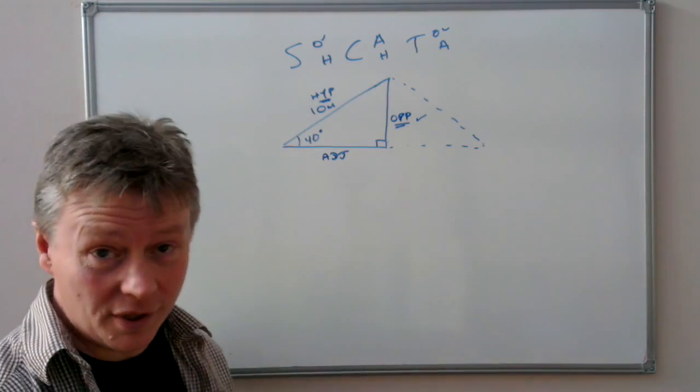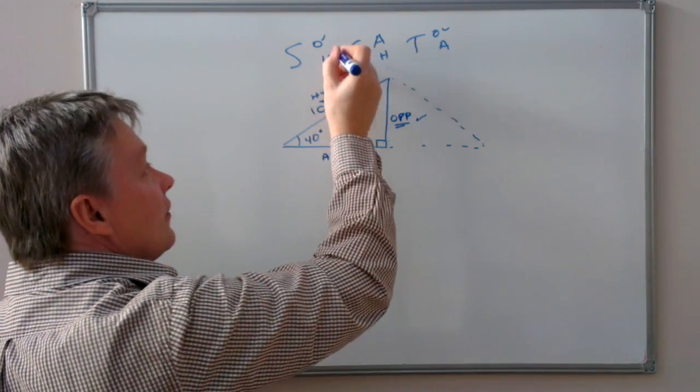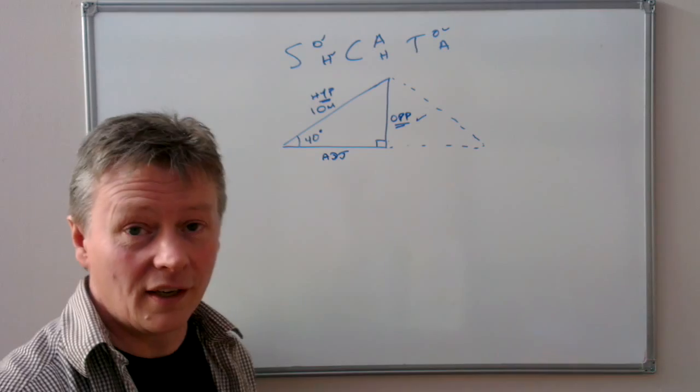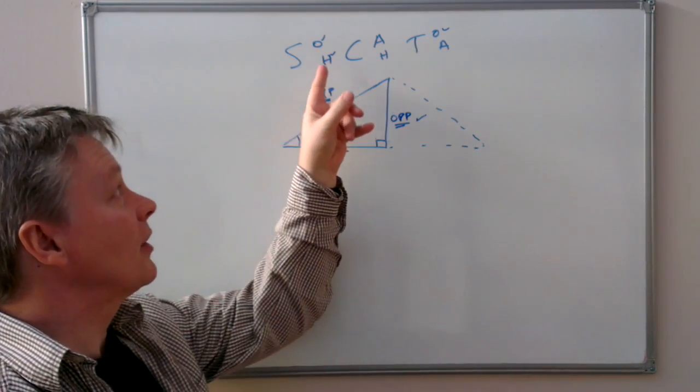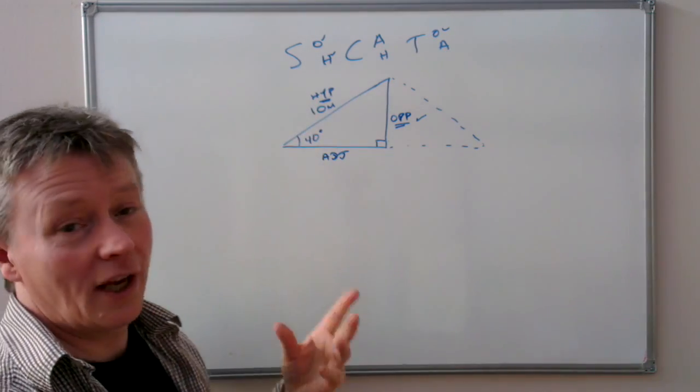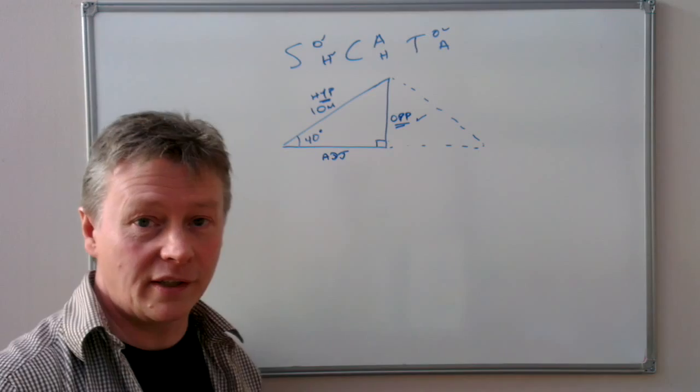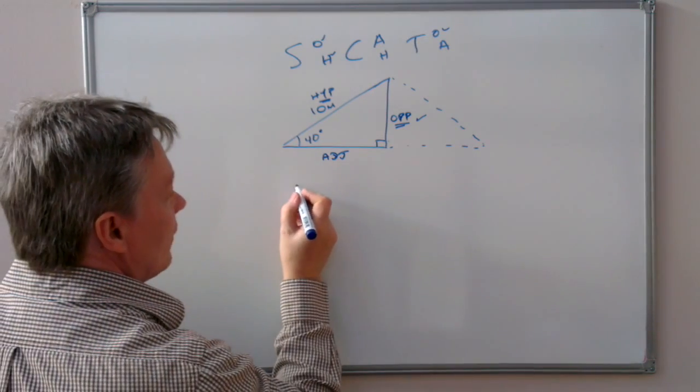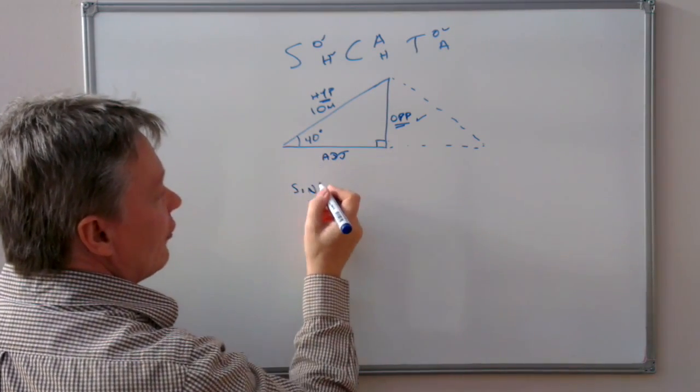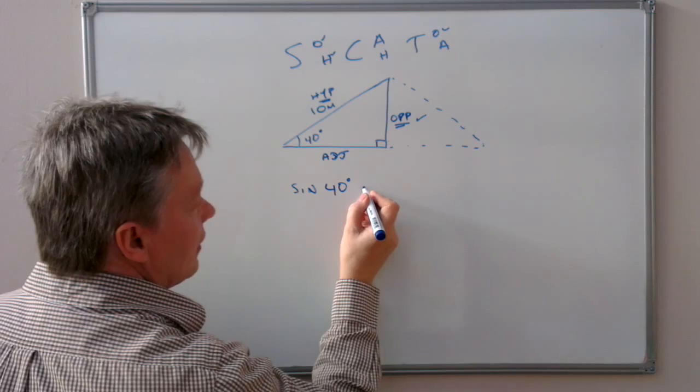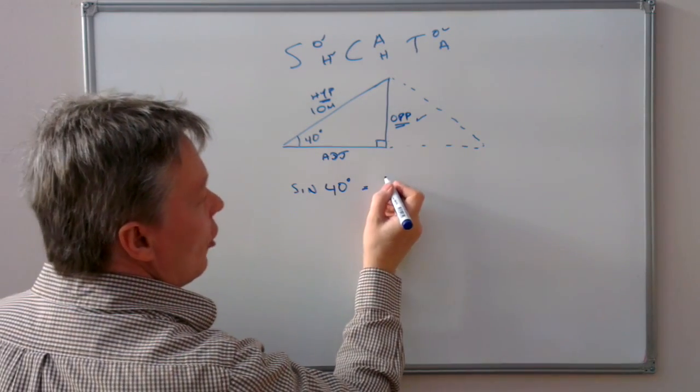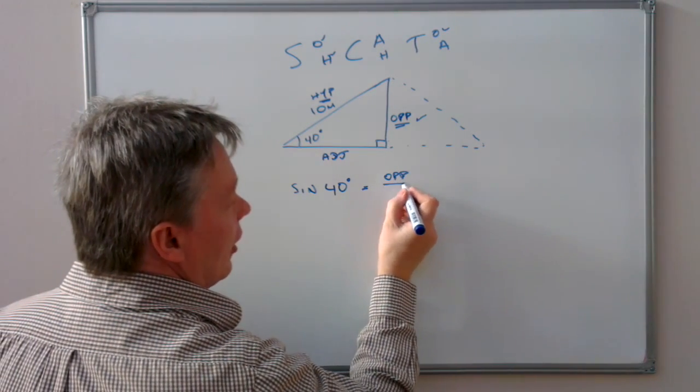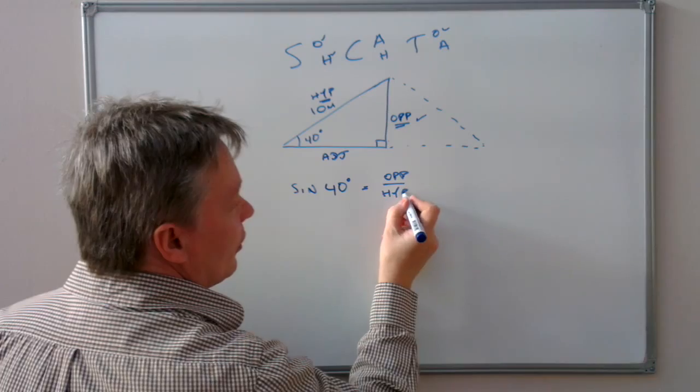So in this particular question, I'm going to start using this relationship, which is the sine rule. So the sine of 40 degrees equals the opposite over the hypotenuse, which is this relationship.